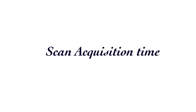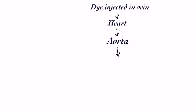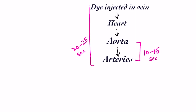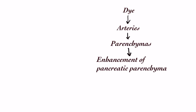Fifth, scan acquisition time. When dye is injected into a vein, it goes to the heart and gets pumped into the aorta and then to the arteries. The aorta along with arteries will shine if captured at the right time — approximately 10 to 15 seconds after aortic arrival, or around 20 to 25 seconds after injection. If done before, the dye may not have reached the arteries; if done later, the dye would have passed from arteries into the parenchyma. This is called the early arterial phase and is used to visualize vascular anatomy and aberrant vessels. The dye then enters the parenchyma, and organs enhance depending upon their vascularity.